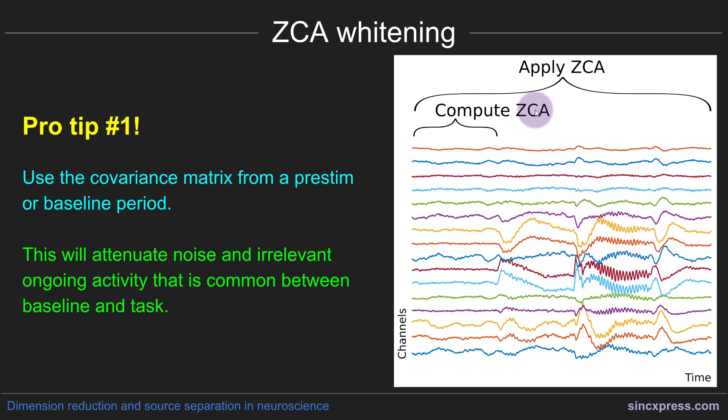So basically this makes the whitening procedure be a little bit more specific to which directions you want to suppress in the data. So you're going to suppress the large data directions during this spontaneous irrelevant trial period and apply those to the entire time window.